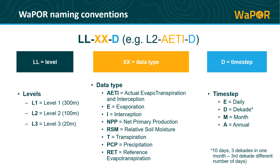Some additional information related to the naming convention of the WAPOR data is provided here. The name of the files consists of three parts. Part 1 is the level or the spatial resolution of the data, and remember that each level covers different areas, with the lowest resolution, Level 1, being available globally. The second part, indicated in yellow here, is the data type. The list below presents the different naming conventions for each of the WAPOR layers.